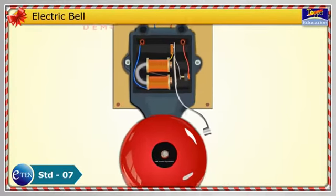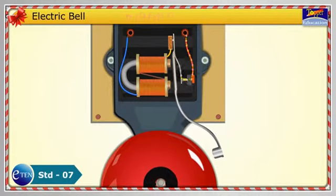When the switch is on, the current flows through the circuit and the iron strip is in contact with the screw. The coil becomes an electromagnet due to the flow of current. It then pulls the iron strip. In the process, the hammer at the end of the strip strikes the gong of the bell to produce a sound.